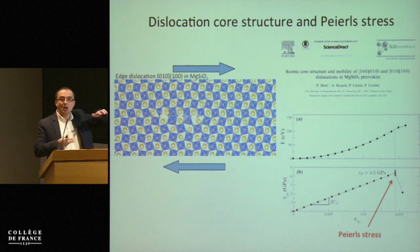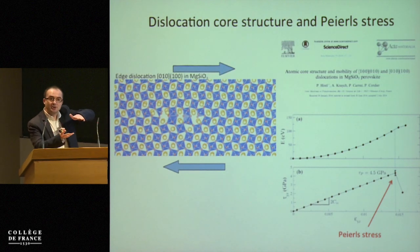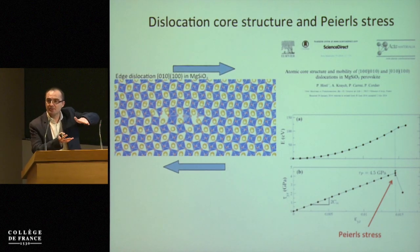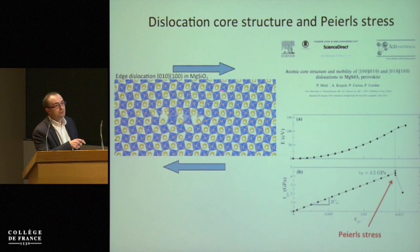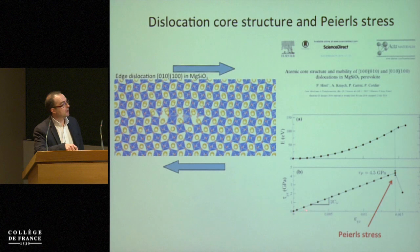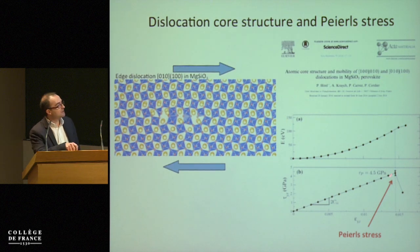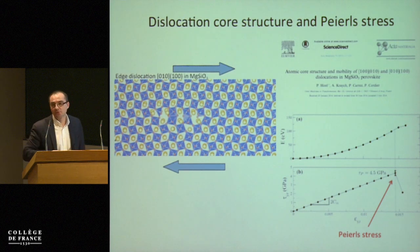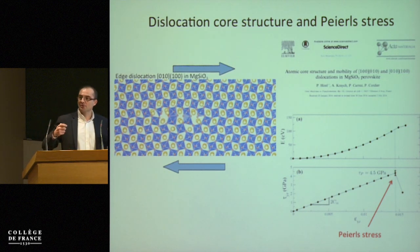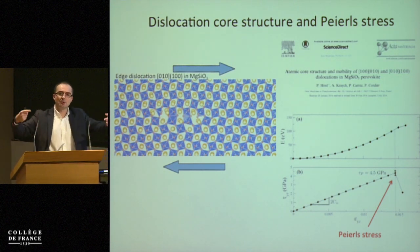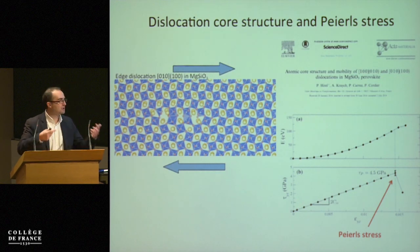Once we have the dislocation in the cell, the good thing with atomistic calculations is that we can stress or strain the cell. If you increase the stress slowly, you get a stress-strain curve that goes up until a point where there is a drop — at exactly that point the dislocation starts to move. This point corresponds to the Peierls stress, at which the dislocation moves as a straight line overcoming the lattice friction.